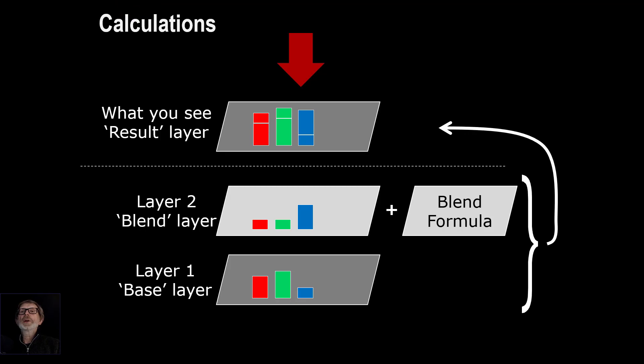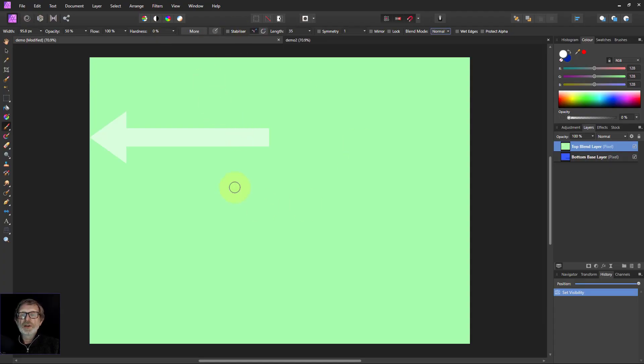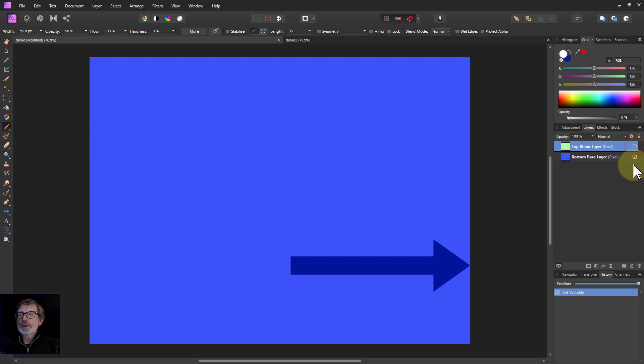So let's have a quick look at something on Affinity Photo itself. So here we've got two layers here. We've got a green layer and a blue layer. So if I turn off the green layer, you can see here at the bottom, there's a blue layer here.